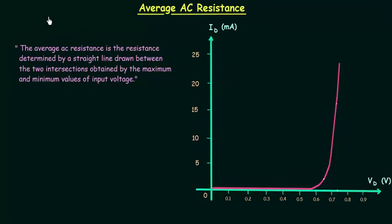In the last two lectures we have completed DC and AC resistance of a diode. In this lecture I will explain average AC resistance.